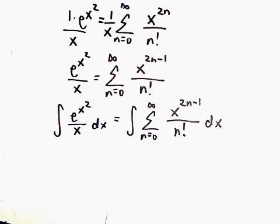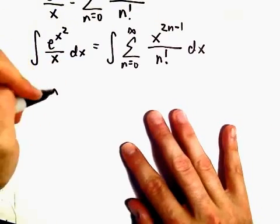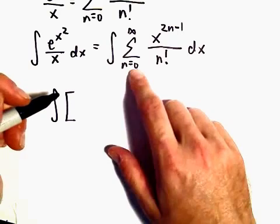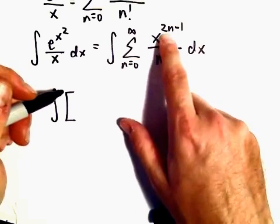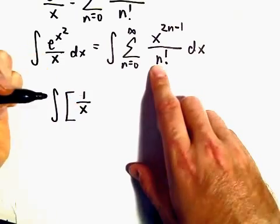I'm going to expand out a couple terms to make sure nothing crazy is happening. If we plug in n=0, notice we'll have x^(-1) over 0 factorial, which is the same thing as 1/x.